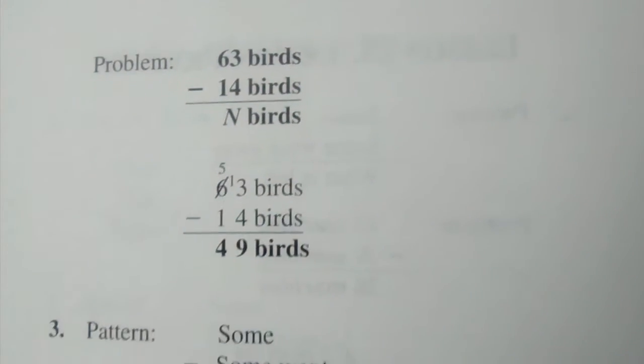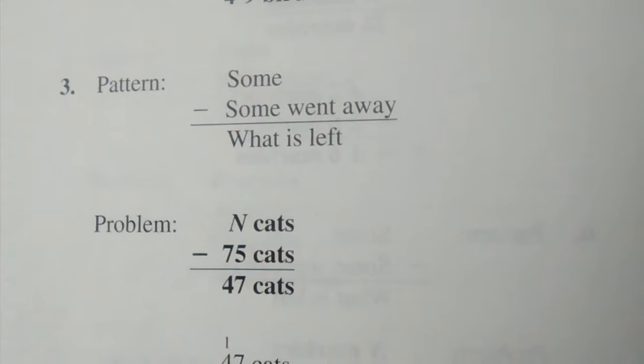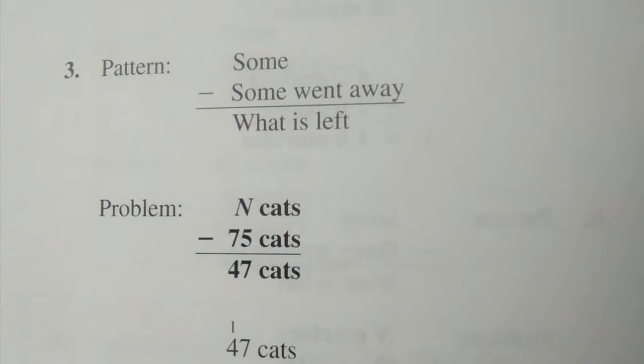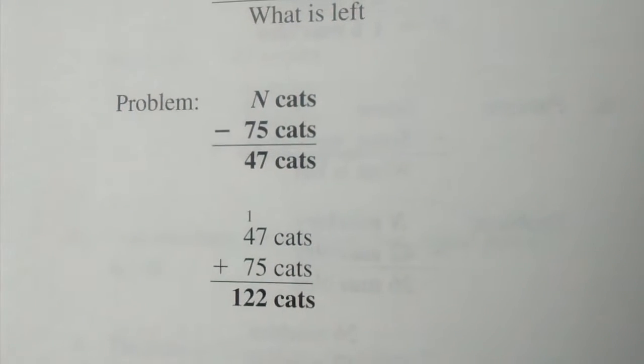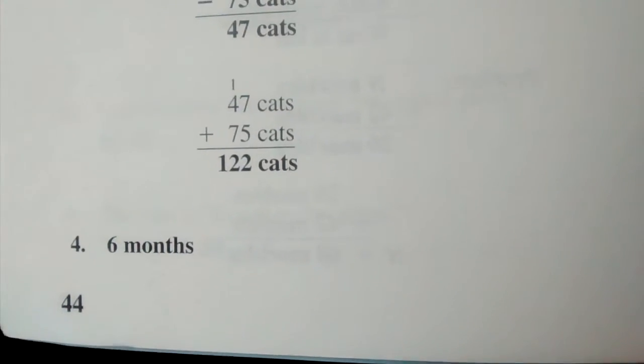Number 3: N cats take away 75 cats equals 47 cats, 122 cats. Number 4: 6 months.